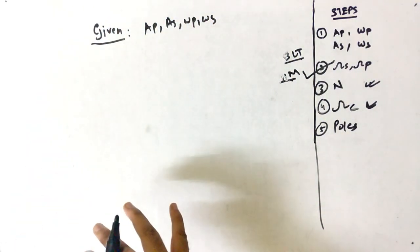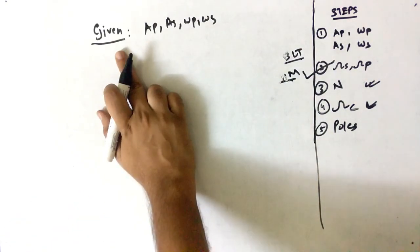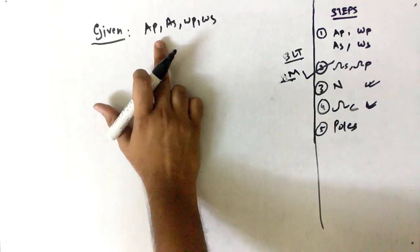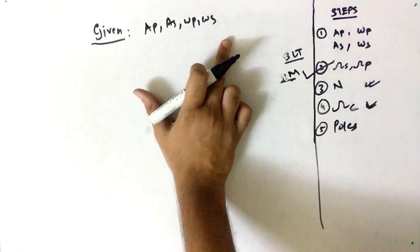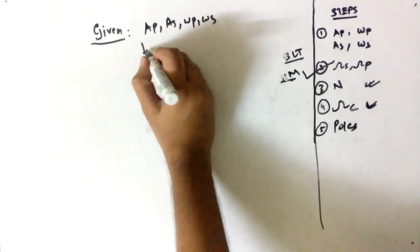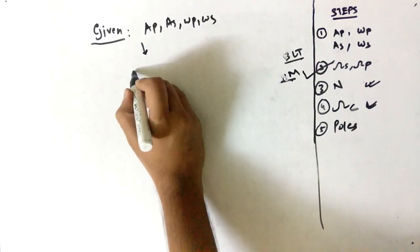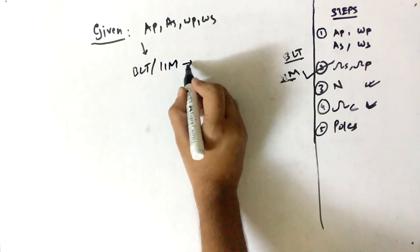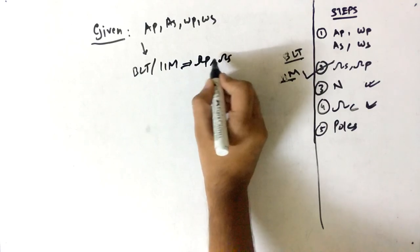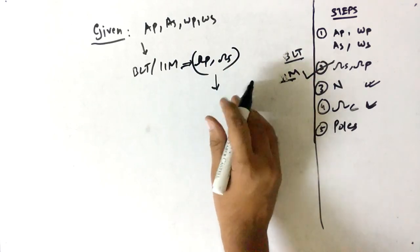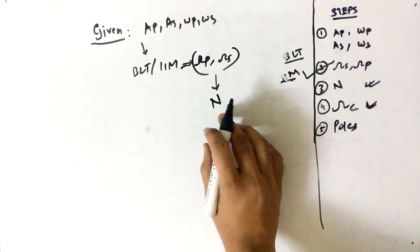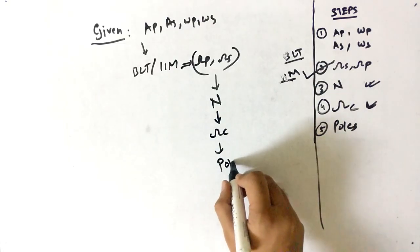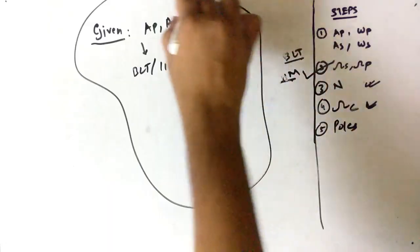Let's recap the flow. First, extract the given quantities: passband attenuation, stopband attenuation, passband frequency, and stopband frequency. Second, select the method — BLT or impulse invariance — to convert digital to analog frequencies. Third, find the filter order. Fourth, find the cutoff frequency. Finally, find the poles. That completes the question.